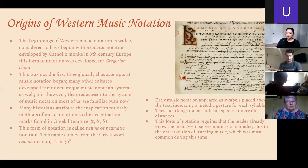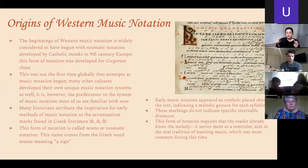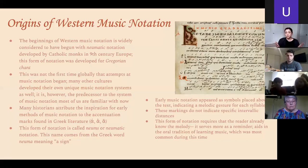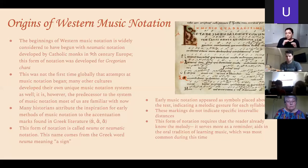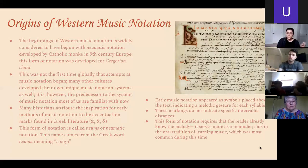Early music notation appeared as symbols placed above the text. The dashes and dots above are telling you the contours of the melody, and below are the words that you're singing. All of this would have been written for vocal music because that's what the church used — they didn't use instruments at that time. The markings don't indicate specific intervallic distances; they're just a general suggestion of roughly how the melody moves overall. This form of notation requires that the reader already know the melody — you can't learn a song you've never heard from this kind of notation.